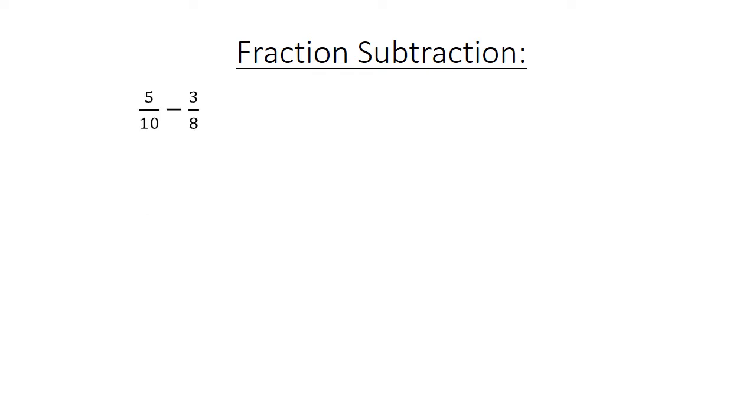Fraction subtraction. 5 over 10 minus 3 over 8. Find the lowest common multiple. 20 over 40 minus 15 over 40 equals 5 over 40. Equals 1 over 8.